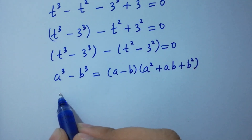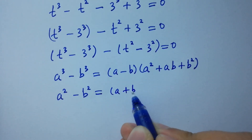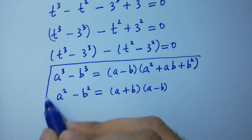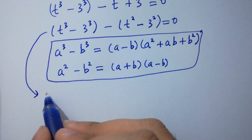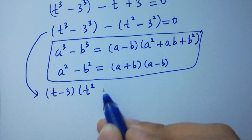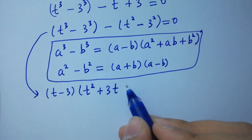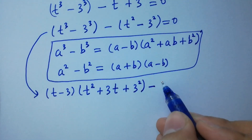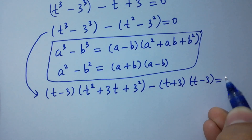Applying the difference of cubes to t cubed minus 3 cubed, and factoring the remaining terms, we get (t minus 3)(t squared plus 3t plus 9) minus (t plus 3)(t minus 3) equal to 0.